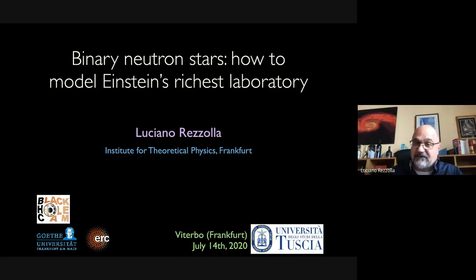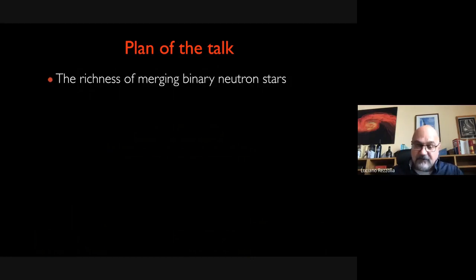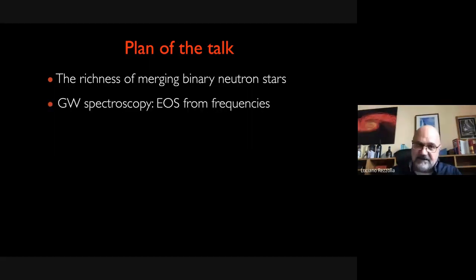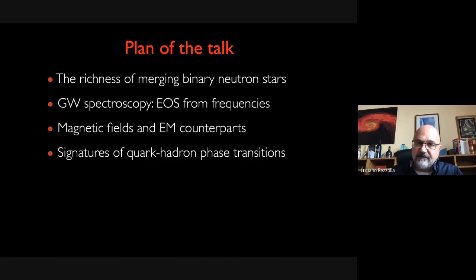I'll be talking about one of the reasons why we think it's interesting and worthwhile to apply Lattice Boltzmann to astrophysics: to study binary neutron stars, which I'll try to convince you is Einstein's richest laboratory. I'll give a short plan of my talk. I will explain why the title, why I think it's such a rich laboratory. I will give a very short introduction to gravitational wave spectroscopy — how you can understand the equation of state of neutron stars by looking at the gravitational wave signal. I will tell you about how you can handle magnetic fields and get an electromagnetic counterpart from neutron star mergers. And I will give a hint about the possibility of probing the phase diagram of strong interaction matter if a hadron-quark phase transition takes place.